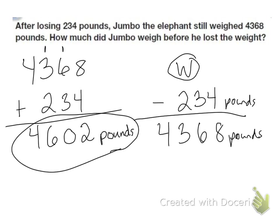And of course, I can always check that by subtracting. I will put 4,602 pounds here to see if I get 4,368. So I'll have to borrow. 6 becomes a 5, 0 becomes a 10. Borrow from that, get a 9. 2 becomes a 12. 12 minus 4 is 8, that's correct. 9 minus 3 is 6, that's correct. 5 minus 2 is 3, that's correct. And 4 minus nothing is 4. So my answer is correct.